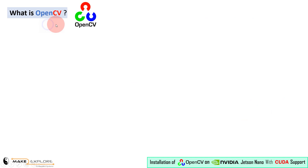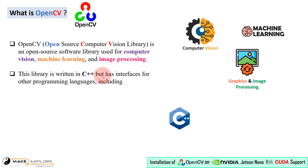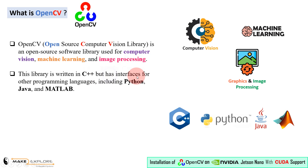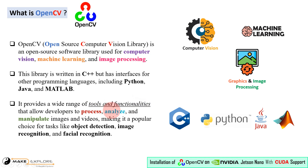OpenCV stands for Open Source Computer Vision Library. It is an open-source software library used for computer vision, machine learning, and image processing. This library is written in C++ but has interfaces for other programming languages including Python, Java, and MATLAB. It provides a wide range of tools and functionalities that allow developers to process, analyze, and manipulate images and videos, making it a popular choice for tasks like object detection, image recognition, and facial recognition.